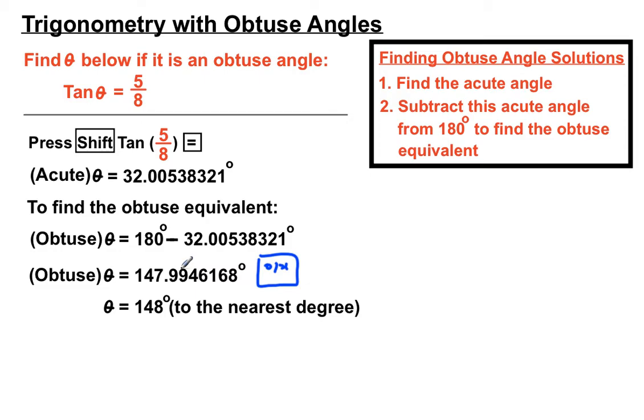So, step one, find the acute angle. And how do we go from an acute angle to an obtuse angle if we're asked to? Take our acute angle away from 180 to find the equivalent obtuse angle.